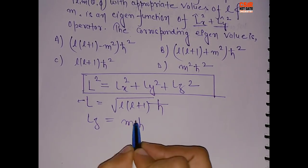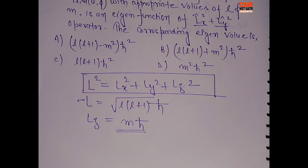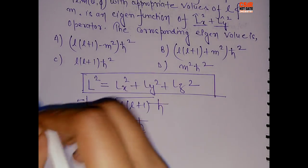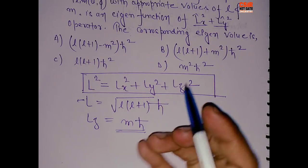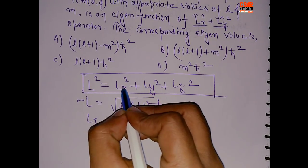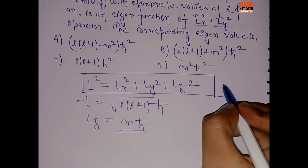is mħ. This we are using in ESR spectroscopy. So these are the three formulas. Now see what has been asked in the question: LX² + LY². This value, LX² + LY². So if you